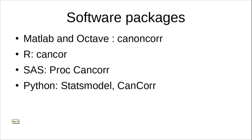You can find canonical correlation functions in different software packages. In MATLAB and Octave there are good functions available; in R you have the cancor function; in SAS there is PROC CANCORR; and in Python's statsmodels there is also a function available. We will take an example later in SAS so you can see how to use statistical packages to perform this analysis.